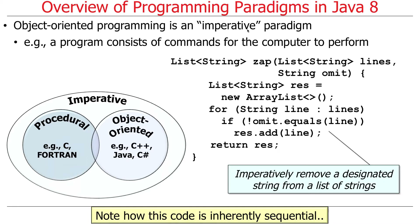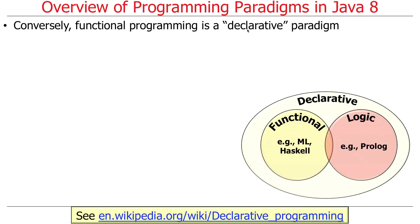One thing to note: this programming style tells the computer how to do the computation. This way of programming is inherently sequential, and it uses what we sometimes call an accumulator pattern — we're accumulating the result into a list of strings. If we want this to run concurrently, we have a lot of work to make changes. It's not something where you just make one little tweak and it suddenly runs on multiple cores. Most software in existence today works like this, or some variant of it.